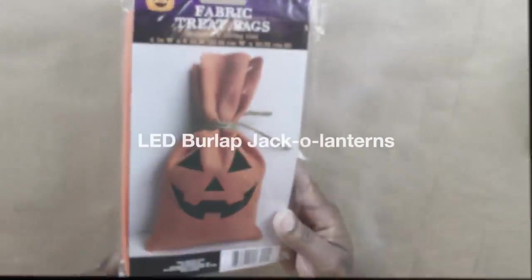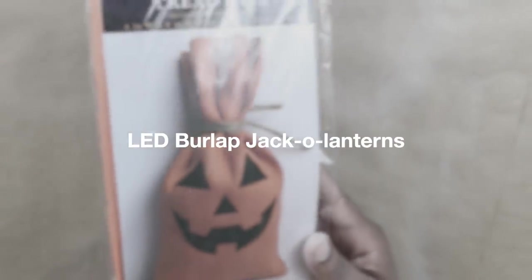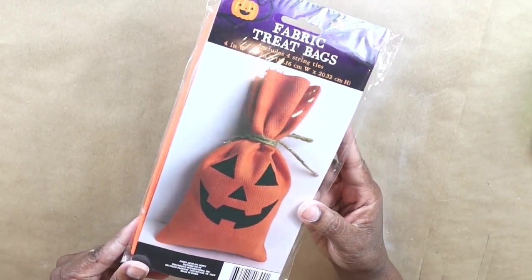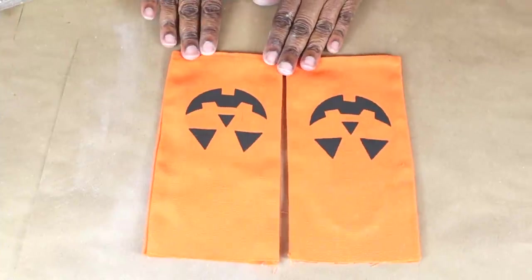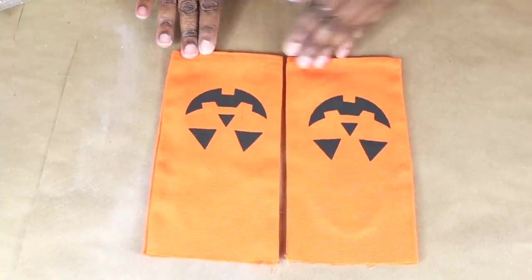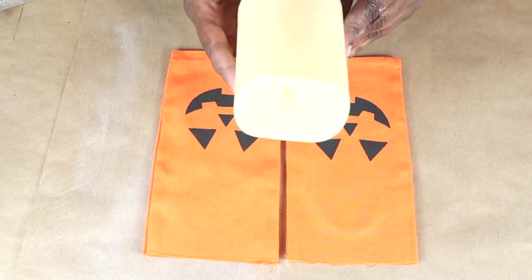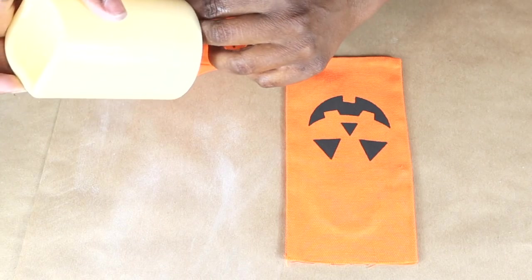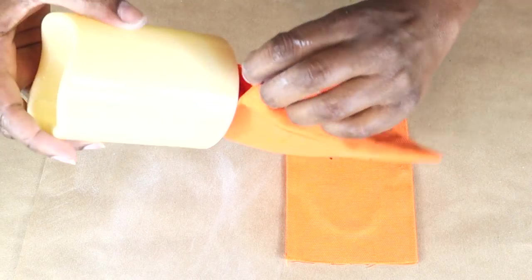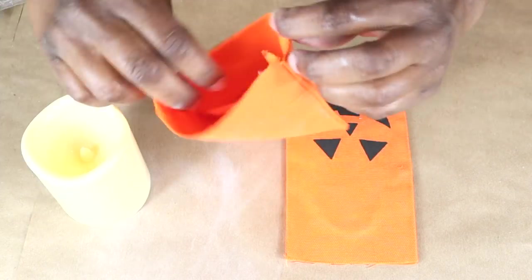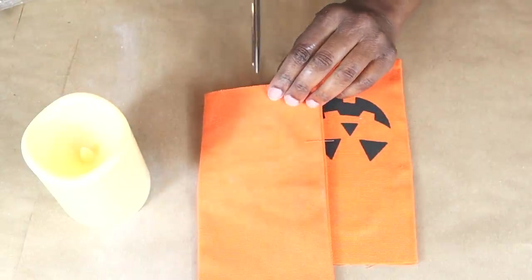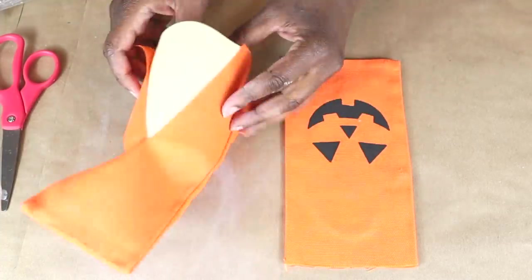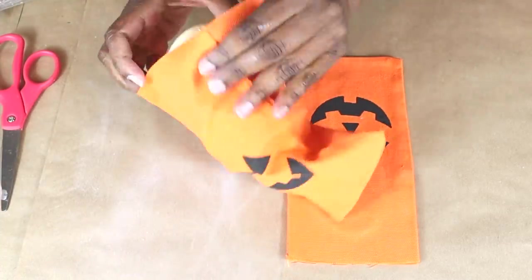For our next DIY, we're going to make some LED burlap jack-o-lanterns using these fabric treat bags from Dollar Tree. I took two of them out and they are rather narrow. So I have these LED candles that I picked up from Walmart. And there was no way that it was going to fit in there. And I was disappointed, but I decided that I would have to do a little surgery on the back. So I cut it down the middle,